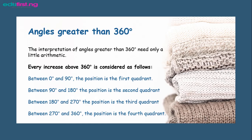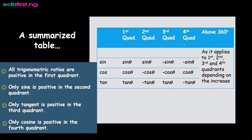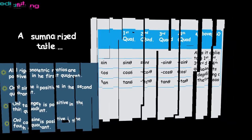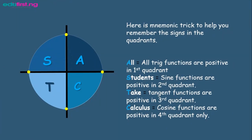Here is a summarized table: all three ratios are positive in the first quadrant; only sine is positive in the second quadrant; only tangent is positive in the third quadrant; and only cosine is positive in the fourth quadrant. You can refer to the table on the right hand side. Here is a mnemonic trick to remember the signs in each quadrant: ACTS — All Students Take Calculus. 'All' signifies the first quadrant, 'Students' the second, 'Take' the third, and 'Calculus' the fourth.